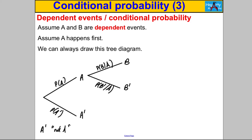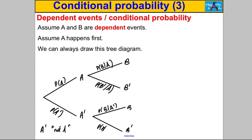Finishing this off — down the scenario where initially A doesn't happen, afterwards either B can happen or obviously it doesn't. This probability here is the probability that B happens given A didn't happen, and this here is the probability that B doesn't happen given A didn't happen. We can always draw this diagram and state each of the following.